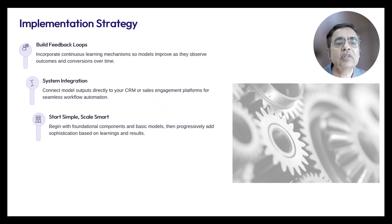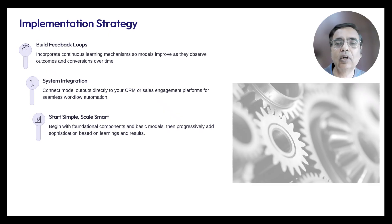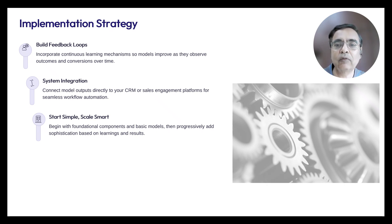It's also very important to start simple and scale smart. Begin with the foundational components of the basic model, then progressively add sophistication. For example, start with the purchase probability model first, then add the product recommendation model later. You could also start with only first-party data and bring in third-party data once you have the first-party pipeline figured out. This makes each rollout stage less complex with fewer components to control.